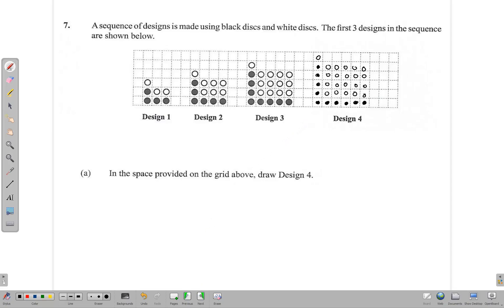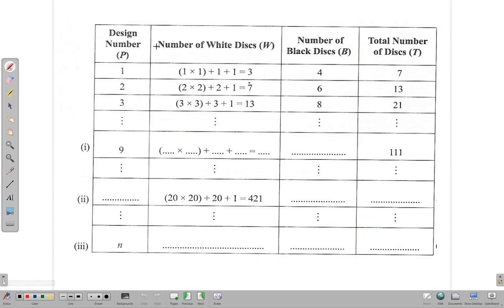Let's continue with the question. Here we have the design number, the number of white disks, the number of black disks, and the total number of disks. So some of the information is filled out. Again, when you're doing these type of questions, you have to look for patterns. It's called patterns and sequence for a reason.